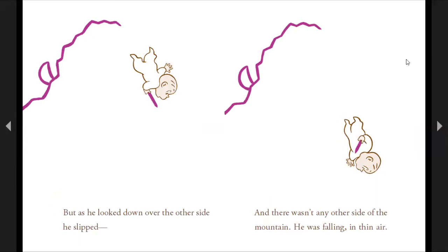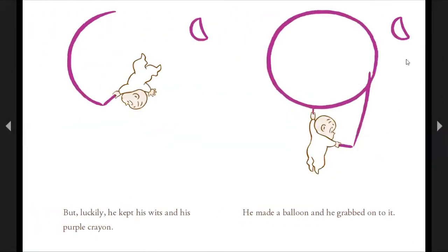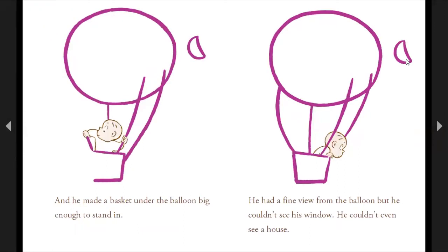But as he looked down over the other side, he slipped. And there wasn't any other side of the mountain. He was falling in thin air. But luckily, he kept his wits and his purple crayon. He made a balloon and he grabbed onto it. And he made a basket under the balloon big enough to stand in.